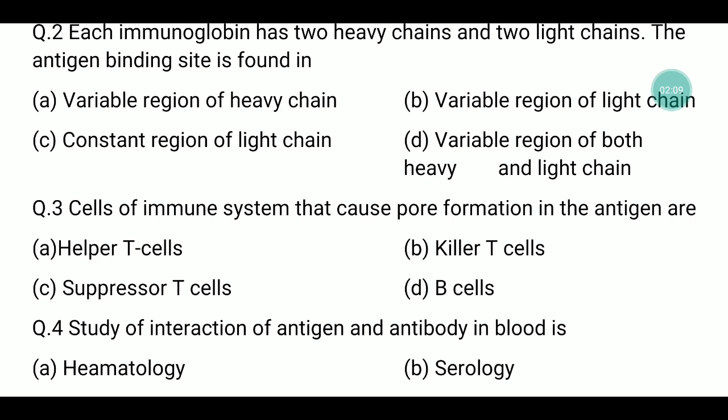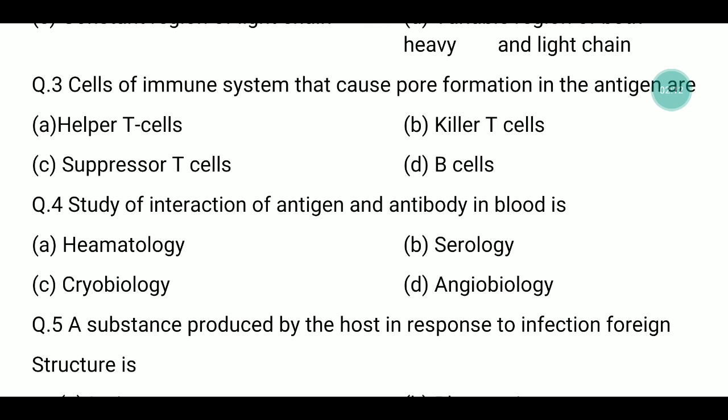Question number four: the study of interaction of antigen and antibody in blood is known as what? Option A hematology, option B serology, option C cryobiology, option D angiobiology. The answer is serology.